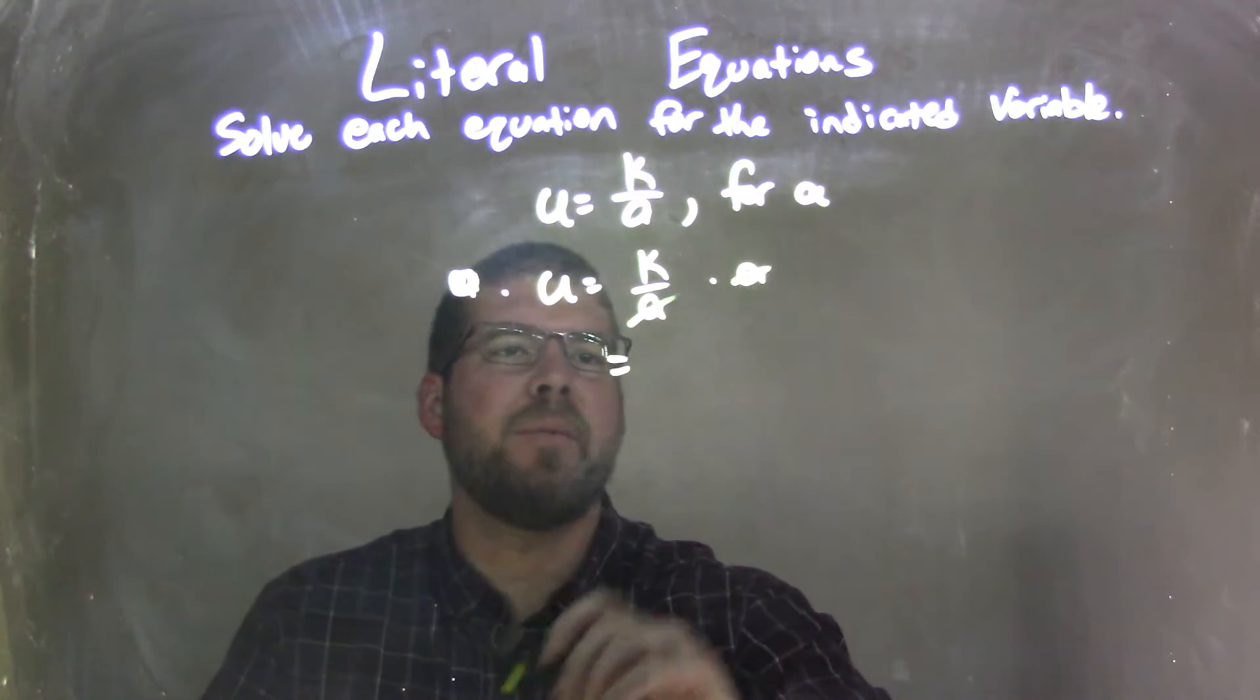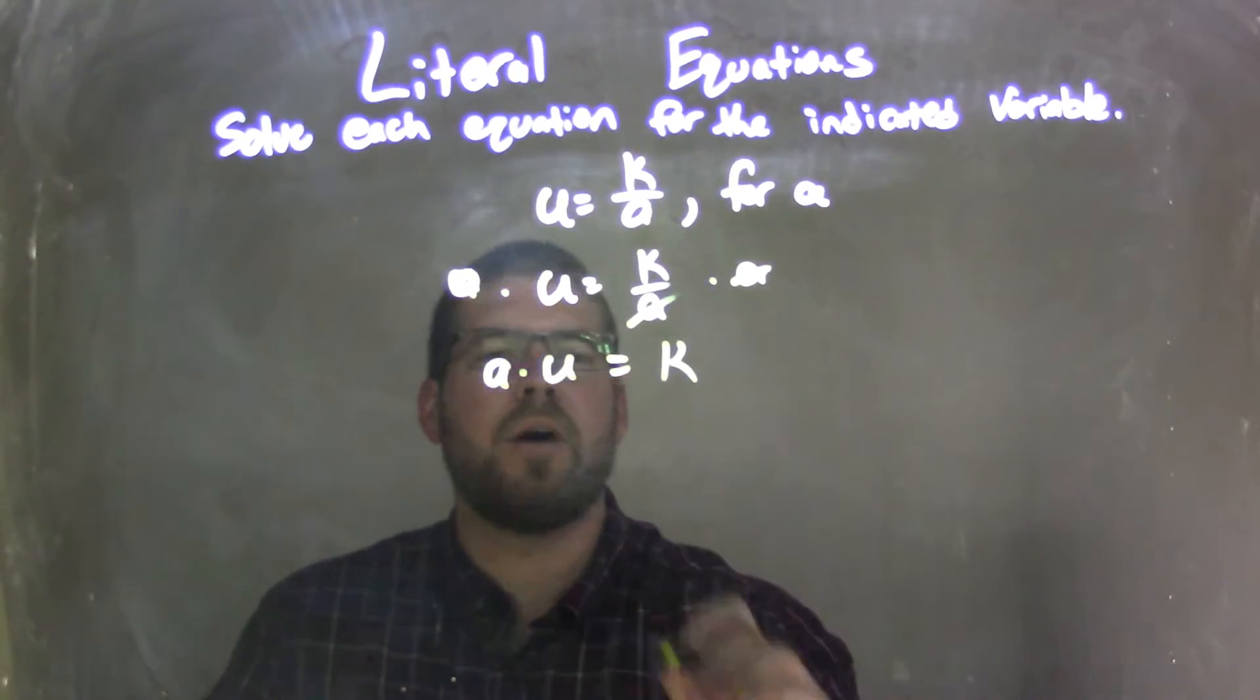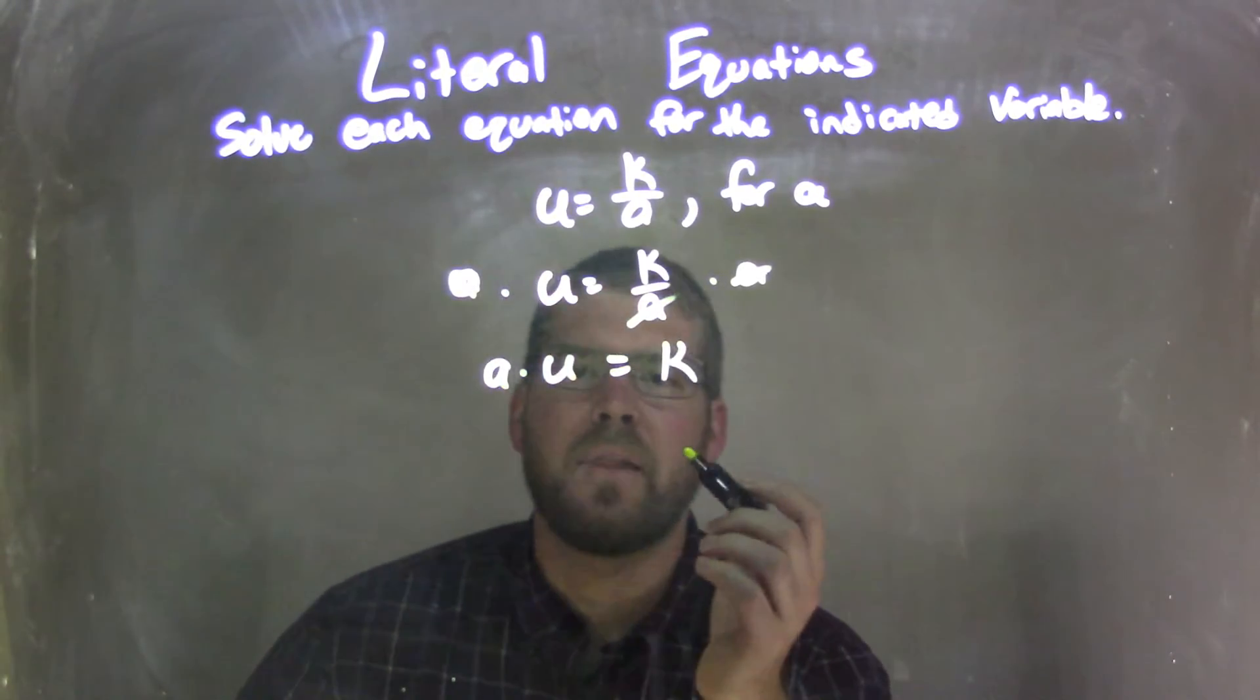But I prefer solving the problem this way. By multiplying a to both sides, I eliminated my a's there, leaving me a k on the left. And then I have a times u, oh sorry, a k on the right, and a times u on the left.